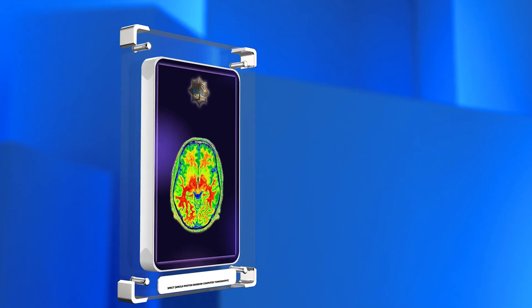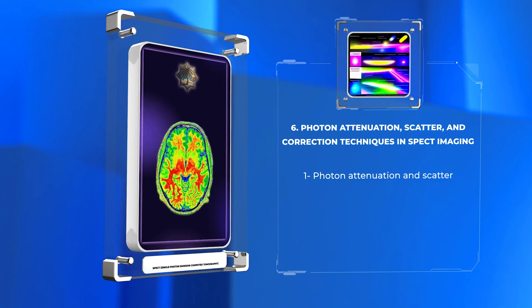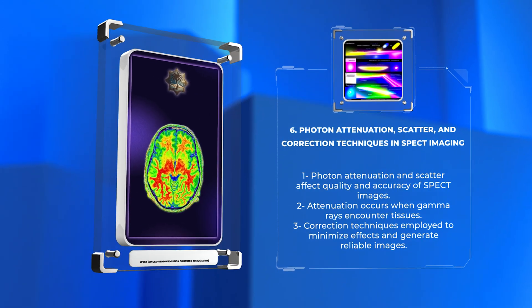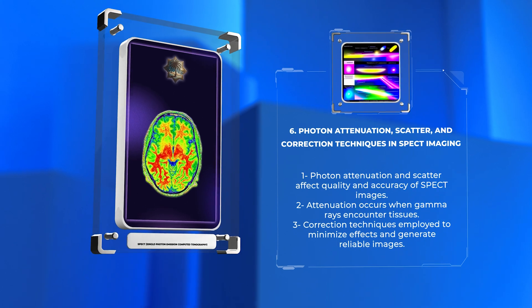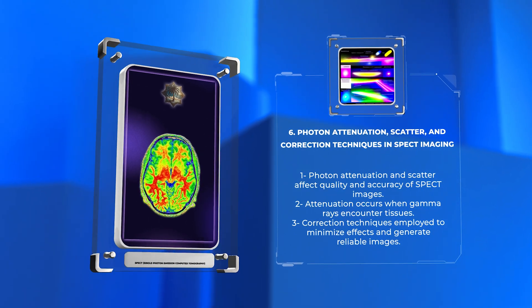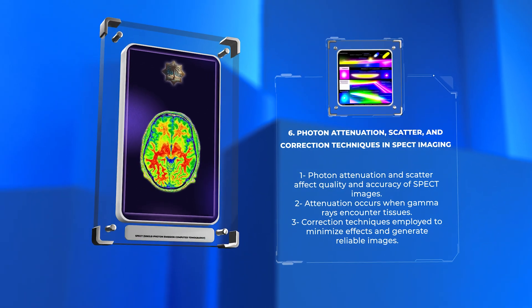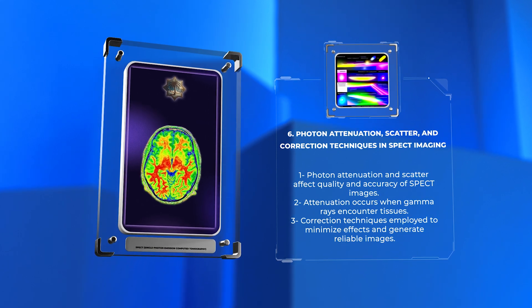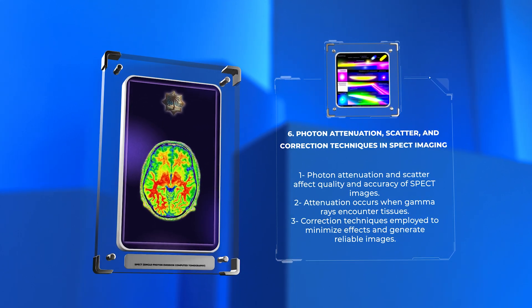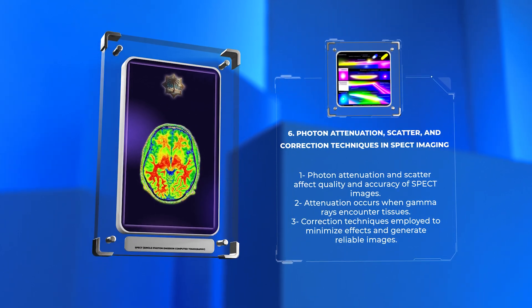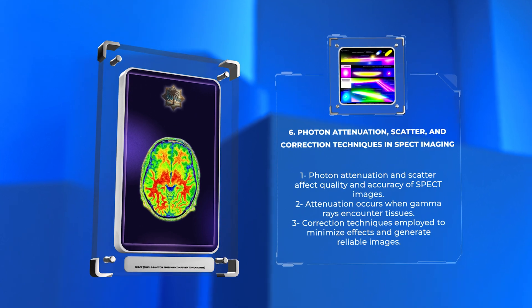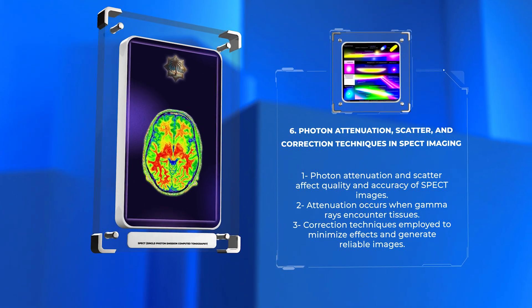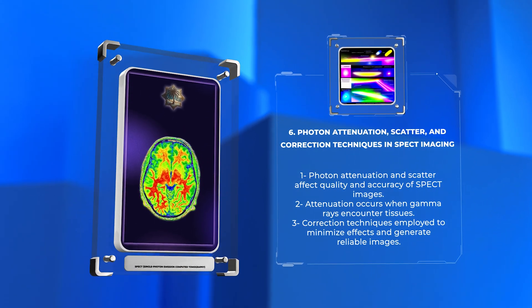Photon attenuation and scatter are physical phenomena that can affect the quality and accuracy of SPECT images. Attenuation occurs when gamma rays encounter various tissues, leading to their absorption or scattering. Correction techniques, such as attenuation correction methods and scatter correction algorithms, are employed to minimize these effects and generate reliable images, aiding in accurate diagnosis and disease management.